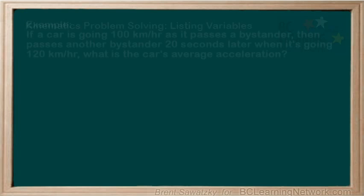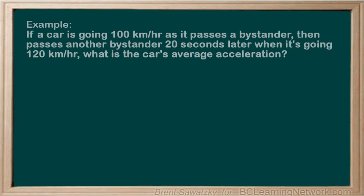For example, if a car is going 100 kilometers per hour as it passes a bystander, then passes another bystander 20 seconds later going 120 kilometers per hour, what is the car's average acceleration?